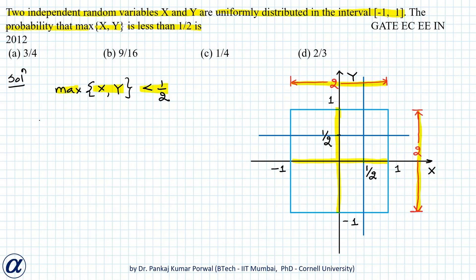Because if any of X or Y is greater than or equal to 1/2, then their maximum will automatically become greater than or equal to 1/2.